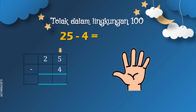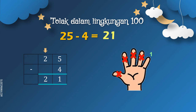Cikgu gunakan jari. Keluarkan 5 jari dan kita tutupkan 4 — 1, 2, 3, 4. Jadi, berapa jari yang tinggal? 1. Kita tuliskan 1 di bawah. Seterusnya, kita tengok di rumah puluh, ada 2. 2 nak tolakkan dengan... tak ada yang perlu ditolakkan. Jadi, 2 terus tulis 2 di bawah. Jadi, 25 tolak 4 sama dengan 21.